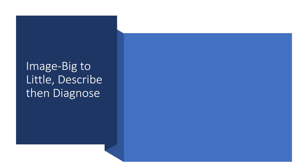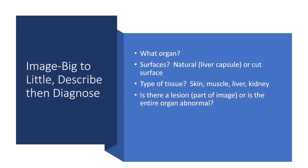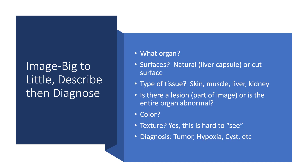When analyzing images, I generally like to go from big to little — describe the image and then give your diagnosis. What organ is affected? What surface is being shown — is it a natural surface, for example the capsule of the liver, or is it a cut surface where someone cut the organ with a knife? What type of tissue — skin, muscle, liver, kidney? Is there a lesion affecting only part of the image, or is the entire organ abnormal? What's the color of the organ? Is there a texture? When you look at the caption, see if the author gave a description of the texture. Then come up with your diagnosis — is it a tumor, hypoxia, a cyst, or whatever your diagnosis happens to be.